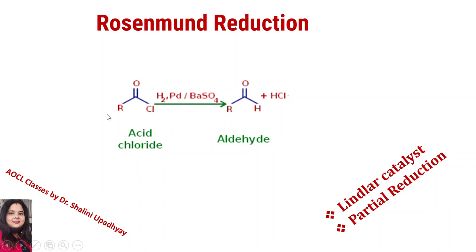For example: if you take CH3COCl — acetyl chloride — you get CH3CHO, which is ethanal, with removal of HCl. If we take an aromatic ring — benzoyl chloride, C6H5COCl — then the final product is benzaldehyde, C6H5CHO, in the case where we use an aromatic ring.